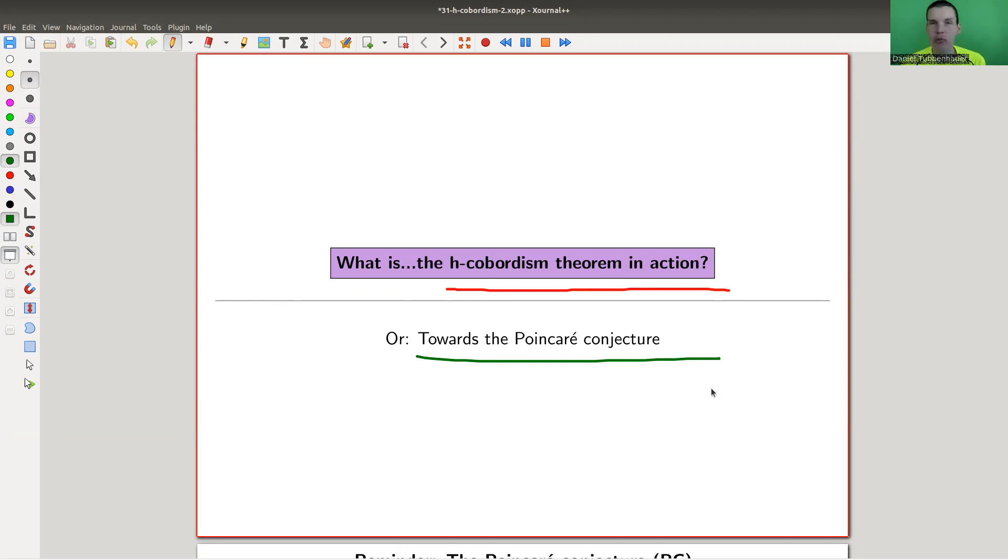Essentially remember that the H-cobordism theorem was this really strange, strong statement that under certain assumptions, homotopy equivalence actually lifts to a homeomorphism, which is really ridiculously strong. It's one of the cornerstones of modern algebraic topology or modern geometric topology, maybe even both.